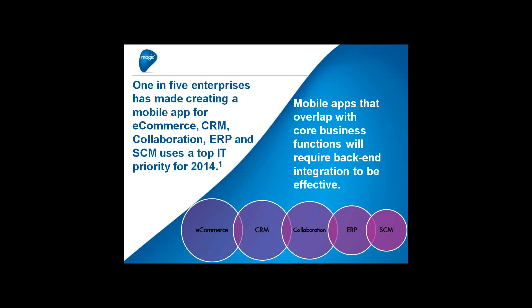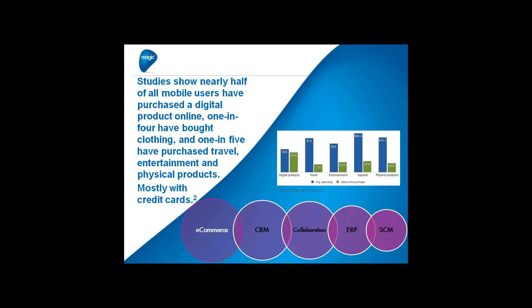One in five enterprises has made creating a mobile app a top IT priority for 2014. Core business functions leading the areas where people need to create apps include e-commerce, CRM, collaboration, ERP, and supply chain management. Studies show that nearly half of all mobile users have purchased a digital product online. One in four have bought clothing, one in five have purchased travel, entertainment, and physical products, mostly with credit cards, and this trend is projected to increase over time.